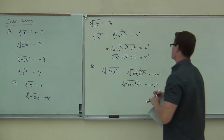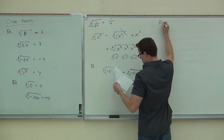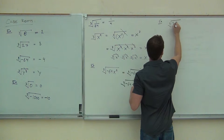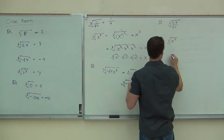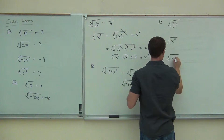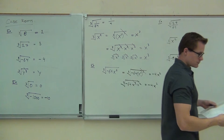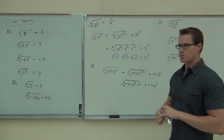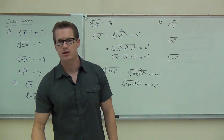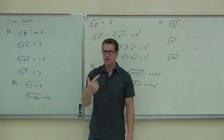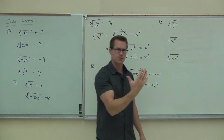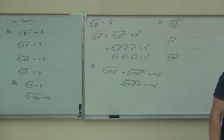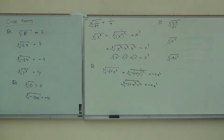I'd like you to try a few of these on your own. By the way, there's not a whole lot of numbers I can give you right now that you can find the cube root of. Because if you think about the first five perfect cubes: 1, 8, 27, 64, 125. That's the first five perfect cubes. So you can only take the cube root of those five numbers between 1 and 200.